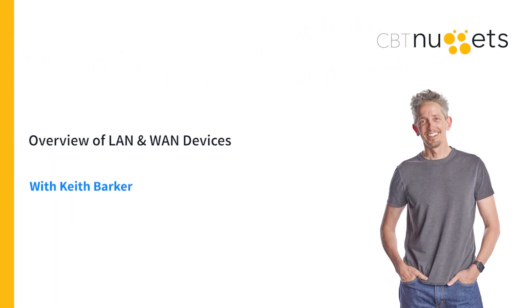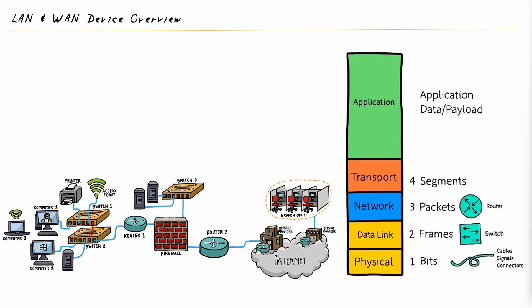In this overview, we get to take a look at some of the common networking devices that we often find in local and wide area networks, including all the cabling types that connect them. In this topology diagram, we have a few icons we're probably familiar with, including a computer, a wireless computer, two computers connected into switches — switch one and switch two — a printer, some servers, a router, and a firewall.